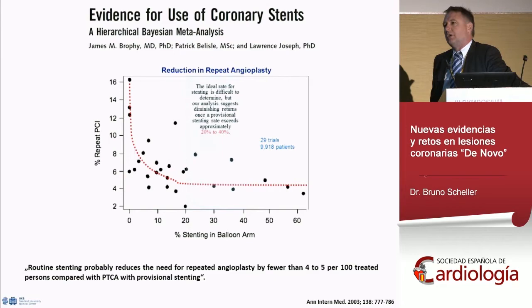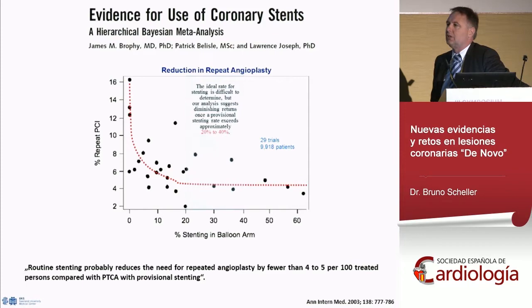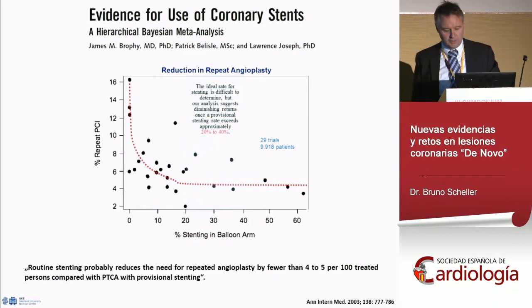In the coronary field, almost 100% primary stenting rates are established in most centers. But this analysis from the bare metal stent era shows that to get the benefit of restenosis reduction compared to angioplasty alone, a provisional stent rate of 20–40% is sufficient to achieve the same clinical outcome for the whole patient population. This means not every lesion really needs a stent.